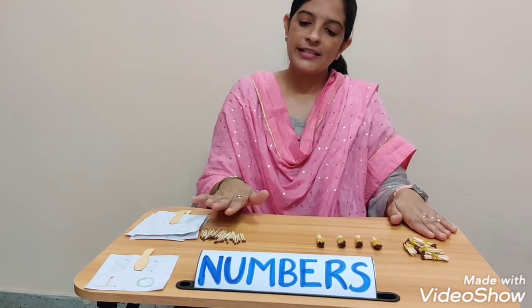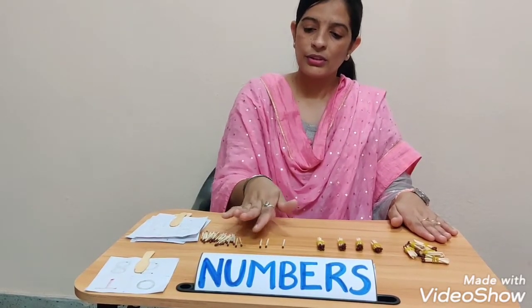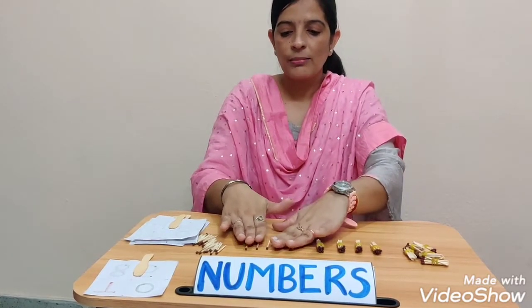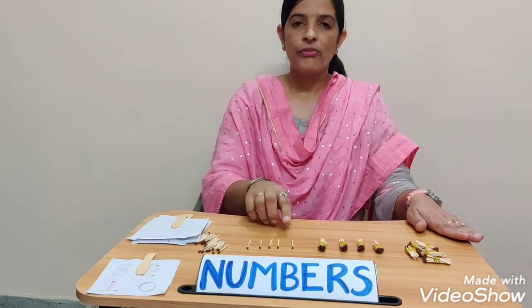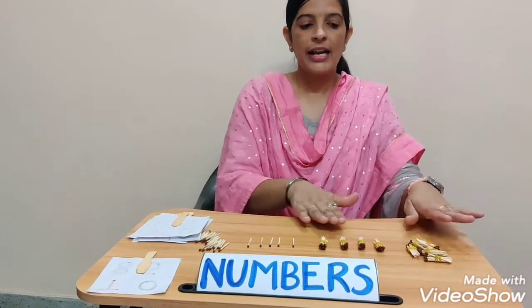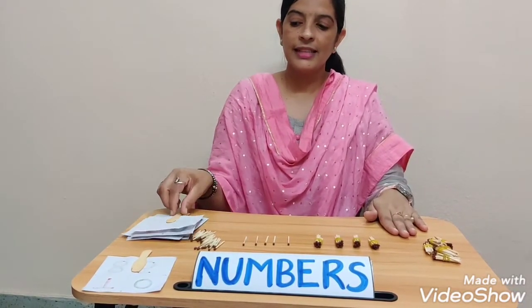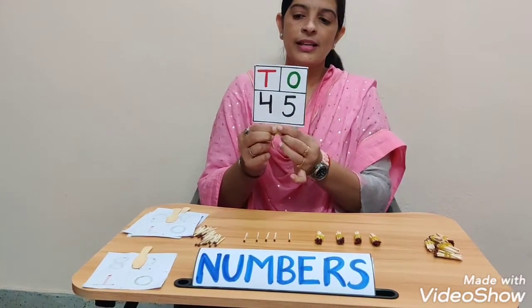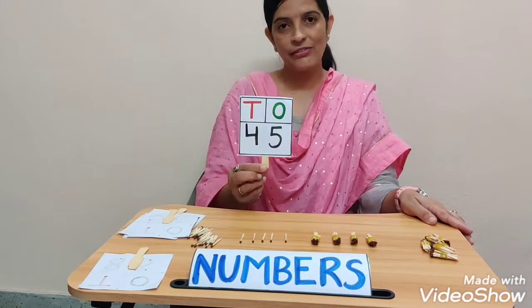Now take some 1s: 1, 2, 3, 4, 5. Now count the total number of matchsticks. We have 5 ones and 4 tens. Tell me the number. Yes — 5 ones and 4 tens. The number will be 45.